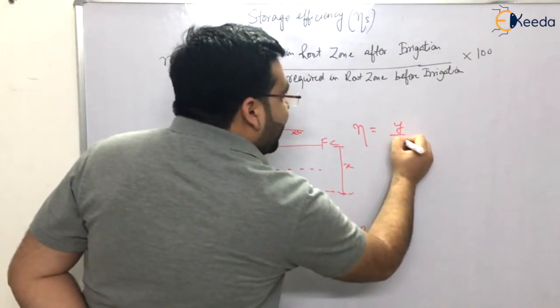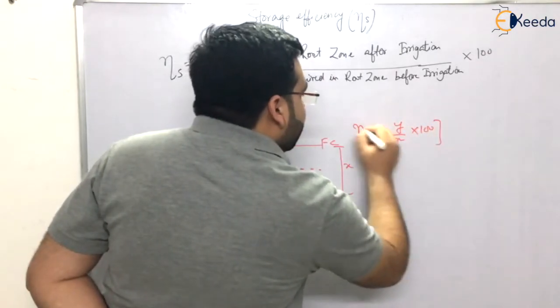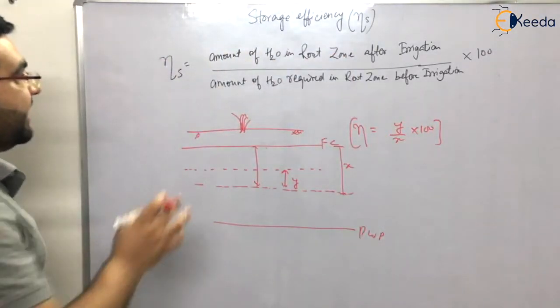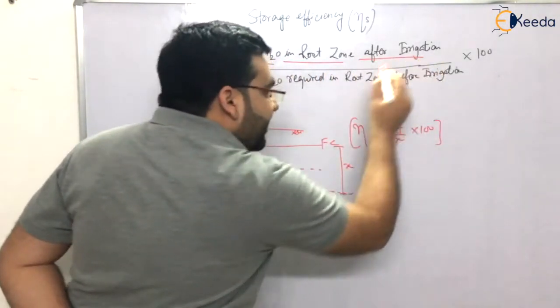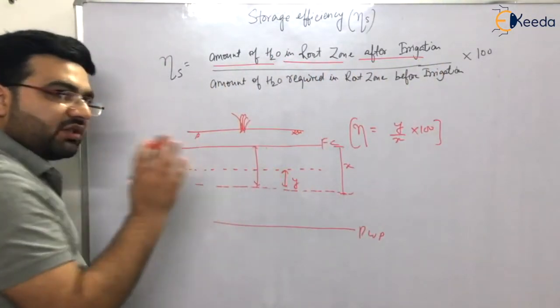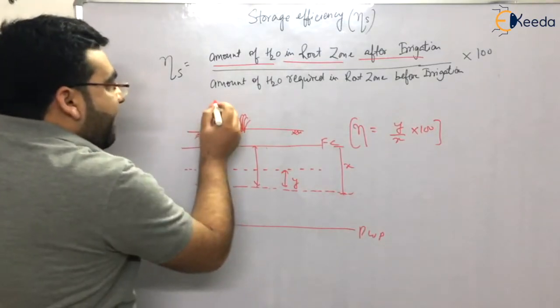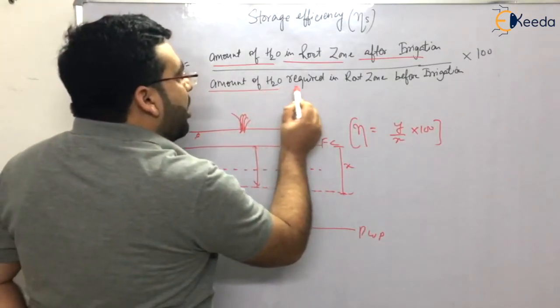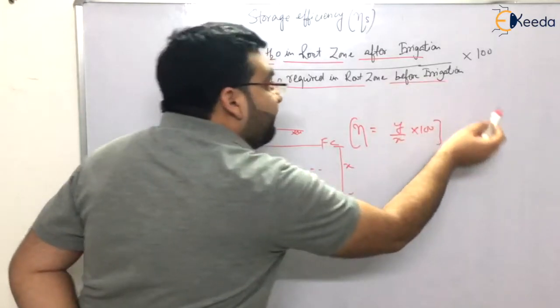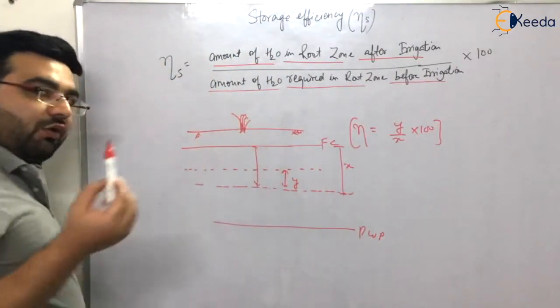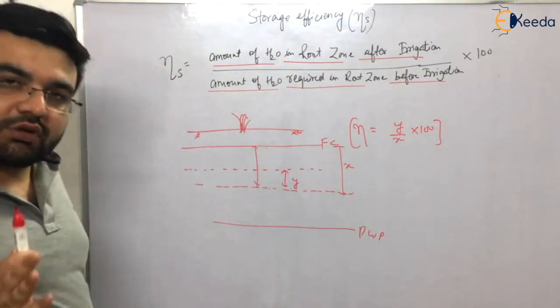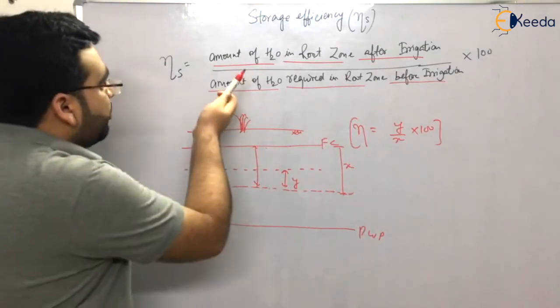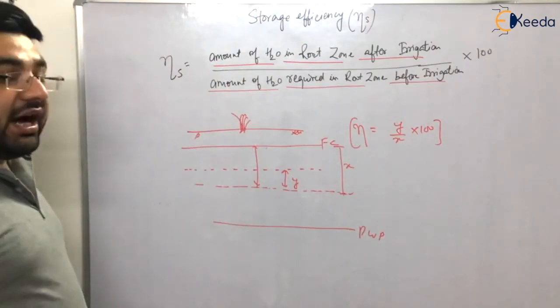So that is what I have written. That is the amount of water in root zone after irrigation, so after irrigation this much more water, divided by the amount of water required in root zone before irrigation. So before irrigation, this much of water was required to go up to the field capacity, maximum water that was required.